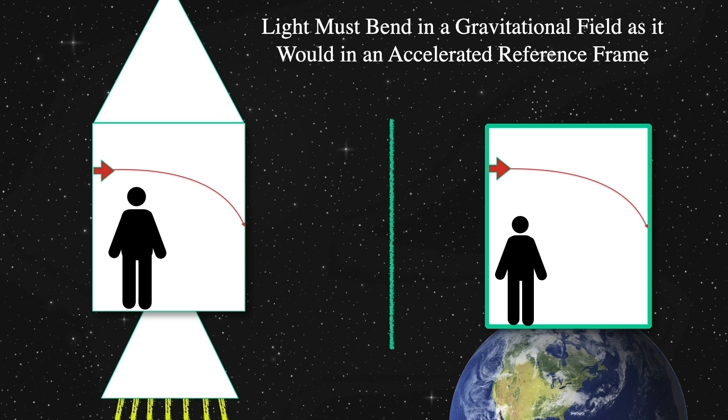Therefore, some combination of length contraction and non-uniformity of clock time in these accelerating labs must occur for the speed of light to be a universal constant for all observers. And this is what we mean by curved space-time.